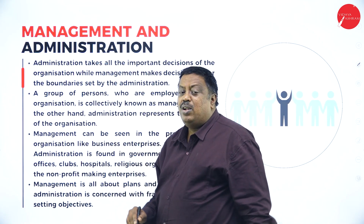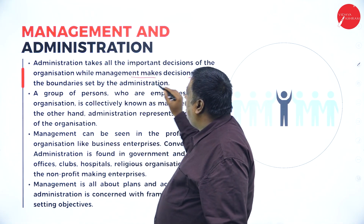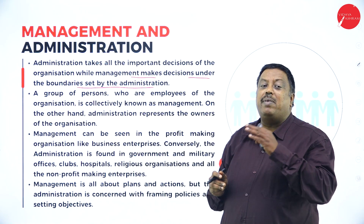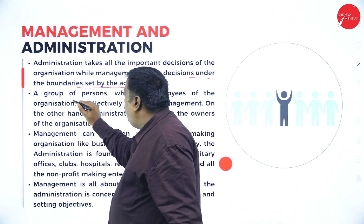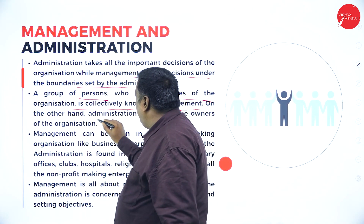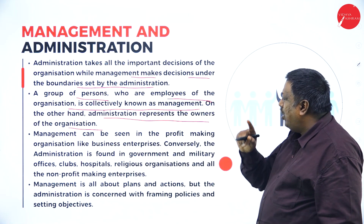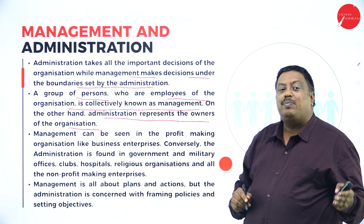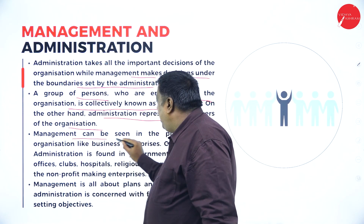Administration takes all important decisions of the organization. All major decisions are taken by administration, but management takes decisions under the boundary set by administration — small decisions which can be executed within the organization. A group of persons who are employees of the organization is collectively known as management, whereas administration represents the owners of the organization. Management is the employees working toward achievement of the common goal, while top-level owners are the administrative people.